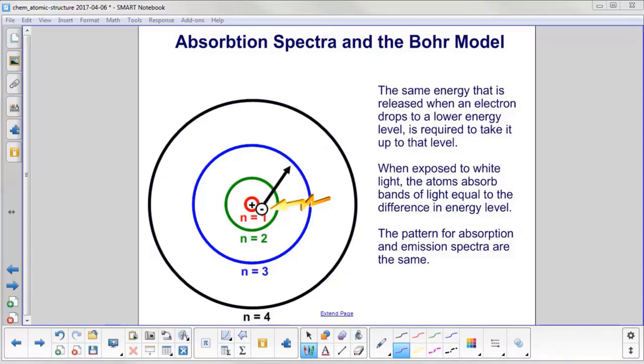We've talked about energetic electrons coming from a higher energy level down to the ground state. Of course, it can go in any other direction. When exposed to white light, which has all the colors in it, the atoms will absorb bands of light equal to the difference in the energy levels. And this we're going to call the absorption spectra.